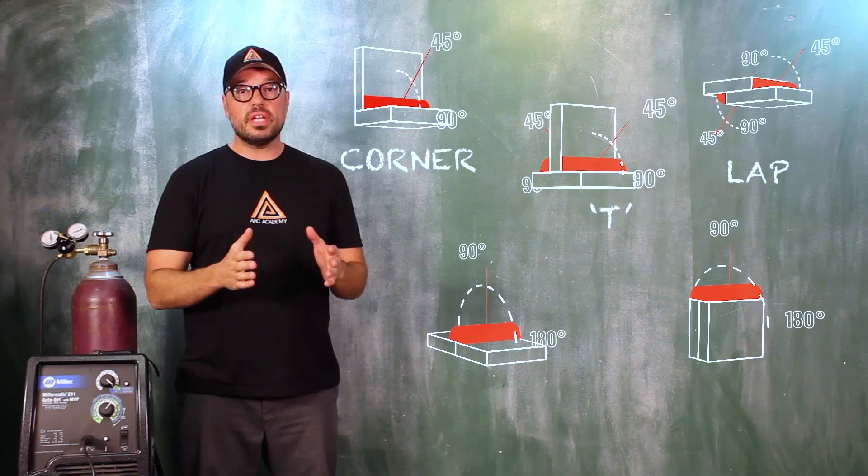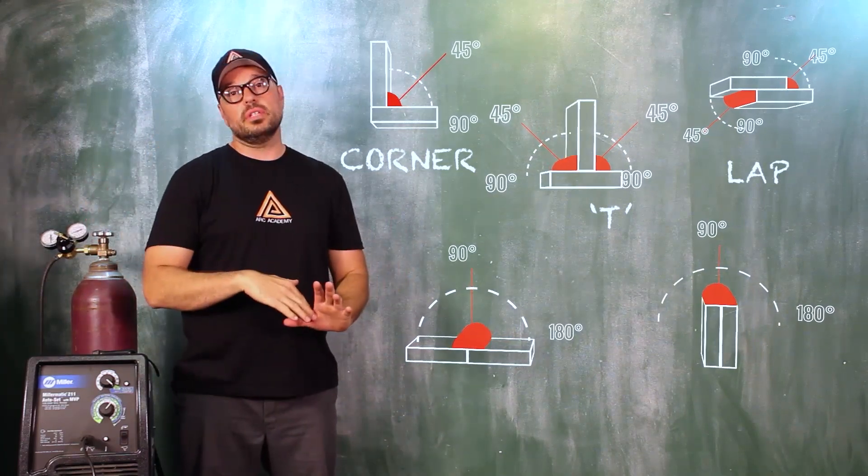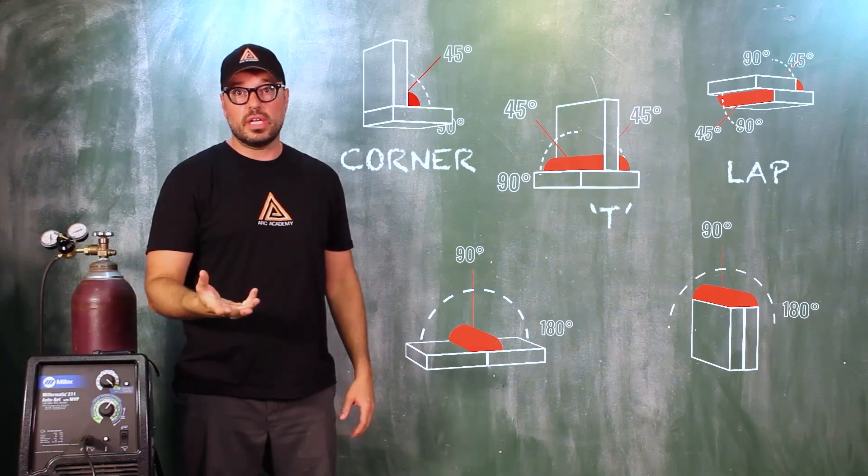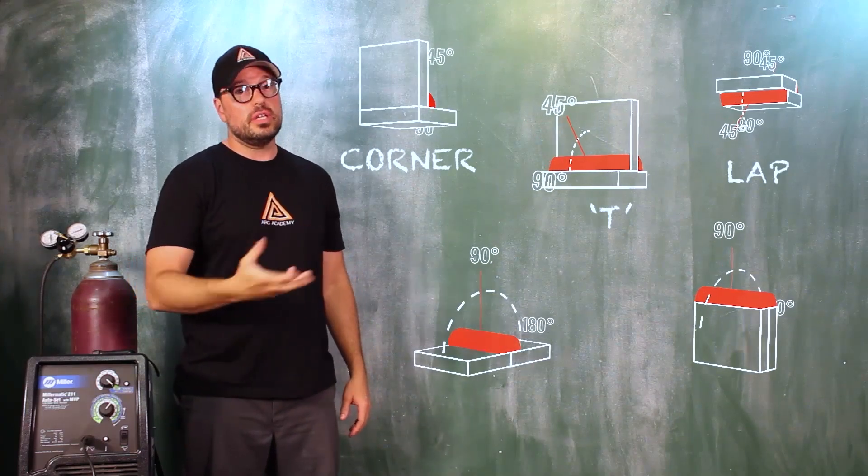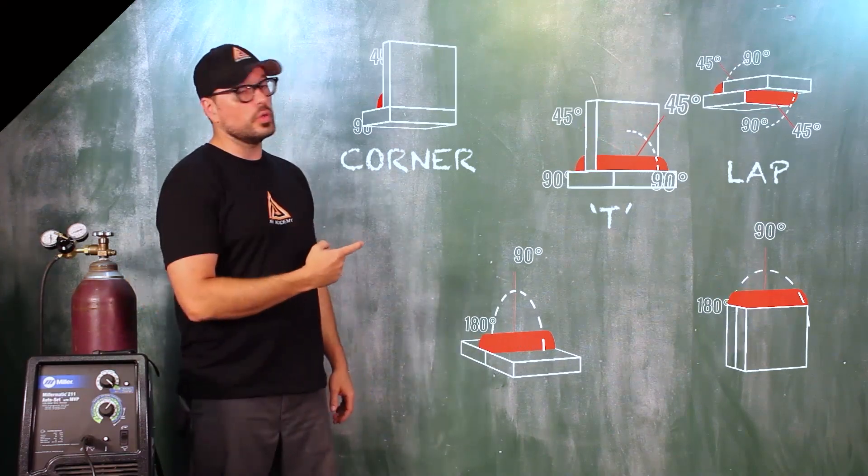You're gonna split your 90-degree angle with your nozzle going in at 45 degrees. That's called your work angle. And the T-joint is just two corner joints, as is the lap joint.